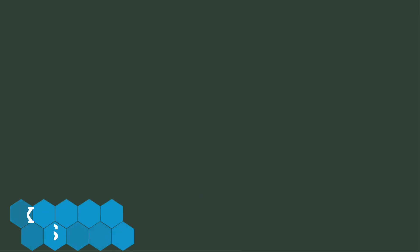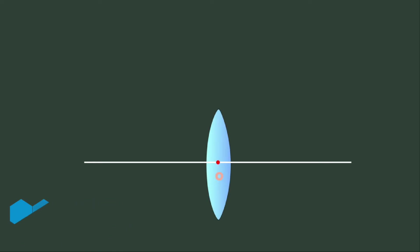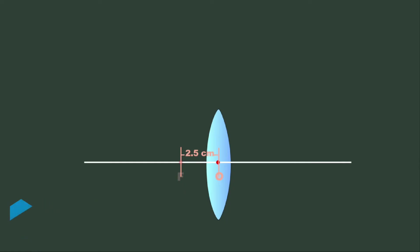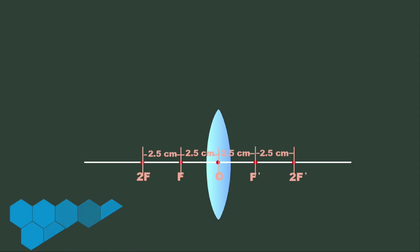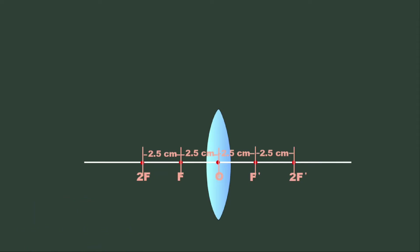For image formation by the convex lens, start the ray diagrams by drawing a horizontal line representing the principal axis. Draw the convex lens and mark its optical center. Measure 2.5 cm from the optical center and mark this point as F. Next, measure 2.5 cm from F and mark it 2F. Do the same on the other side of the lens, marking the first point F' and the second point 2F'. There are six cases to consider for image formation by the convex lens.